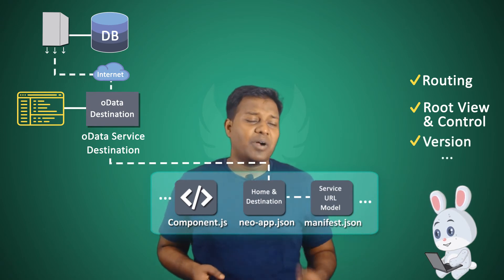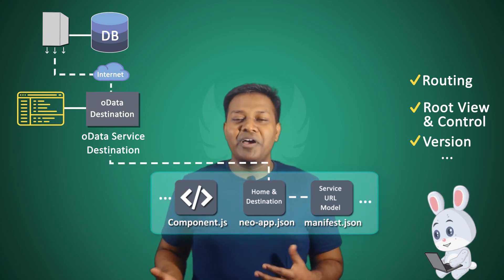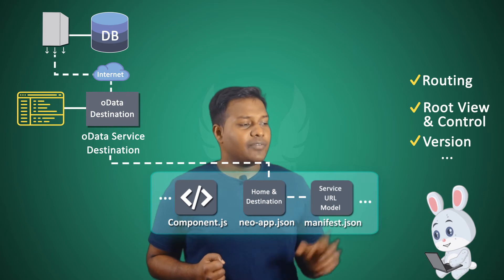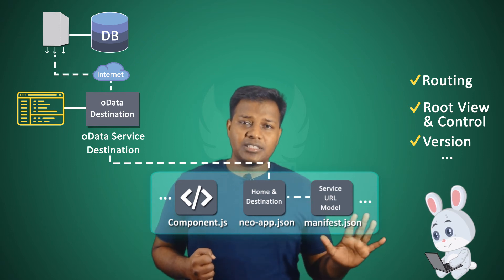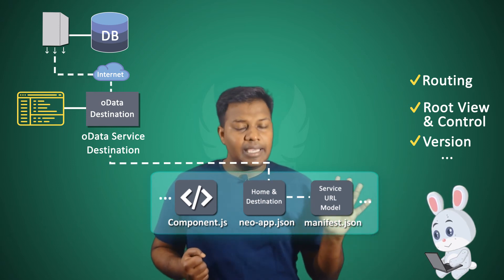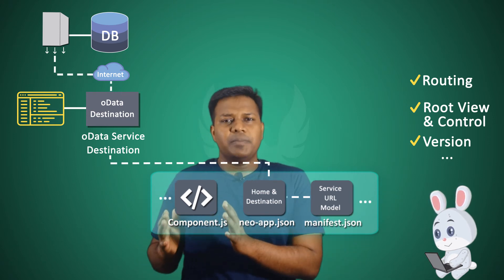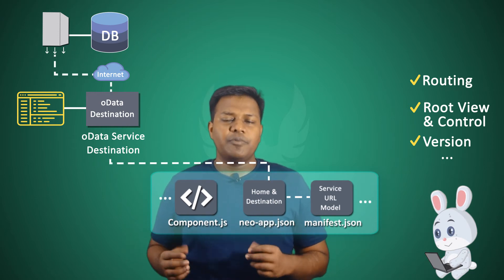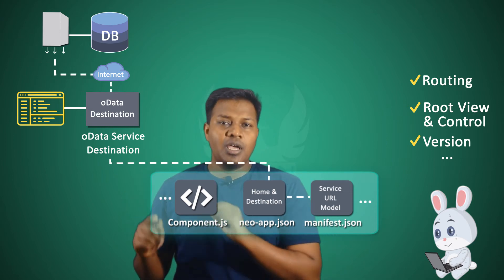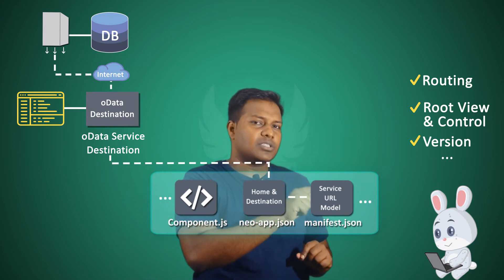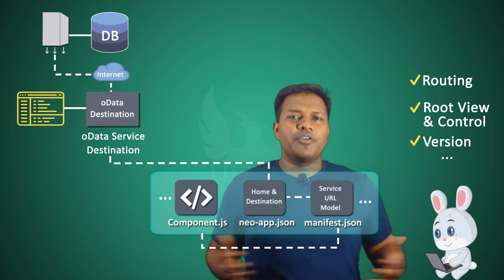This model can then be utilized in your UI5 application and bound to views to show you the data. All the routing should be defined in manifest.json, along with the root view and control. Also, the version of the SAPUI5 application — not the version of the WebIDE, but the version of SAPUI5 — should be defined in manifest.json. Your component.js tells your UI5 application what components are present in the app: views, controllers, and if you want to use routing, you initialize it here.